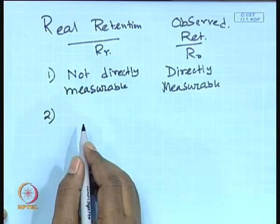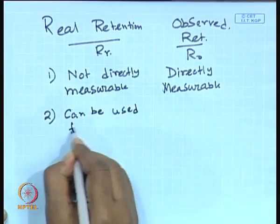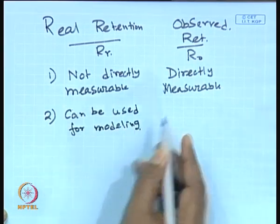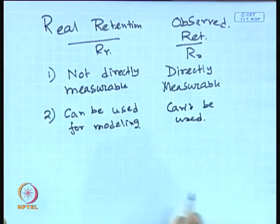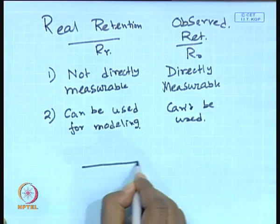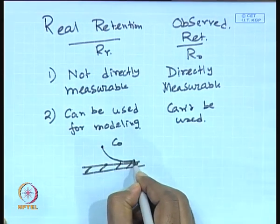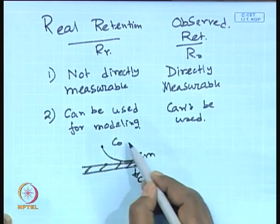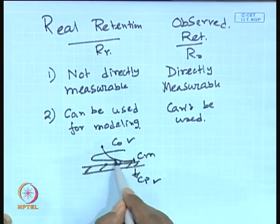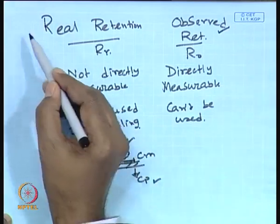Observed retention can be used for modeling purposes, but real retention cannot, simply because between the bulk concentration C-naught and the permeate concentration C_p, there exists a concentration gradient at the membrane surface concentration C_m. There is a concentration boundary layer or mass transfer boundary layer between C-naught and C_p, which observed retention does not include. That is why one is called observed retention and the other is called real retention.